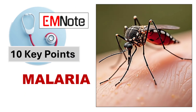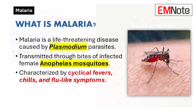10 Key Points About Malaria. What is malaria? Malaria is a life-threatening disease caused by parasites of the genus Plasmodium, transmitted to humans through the bites of infected female Anopheles mosquitoes.